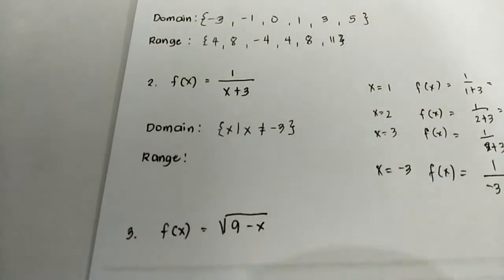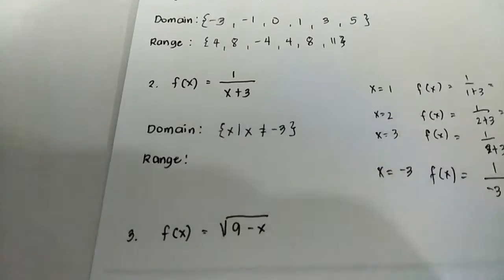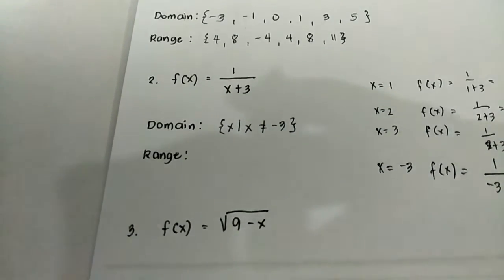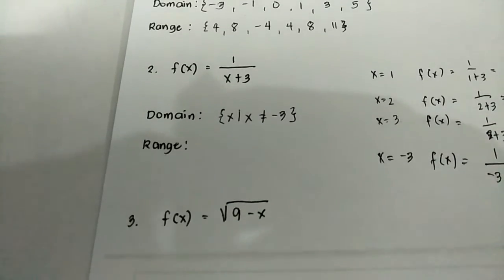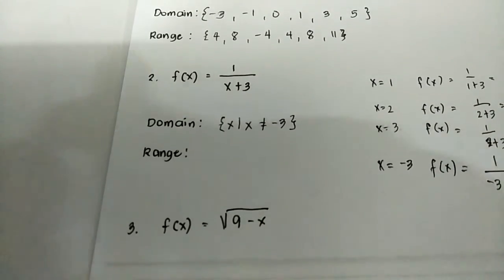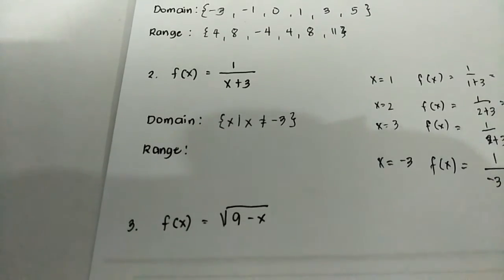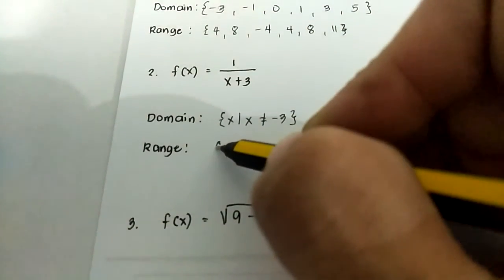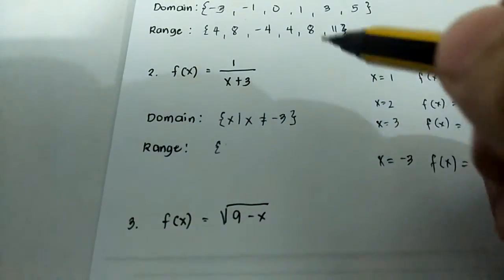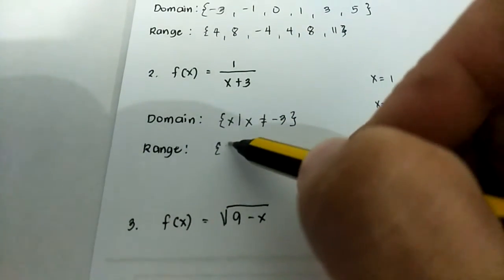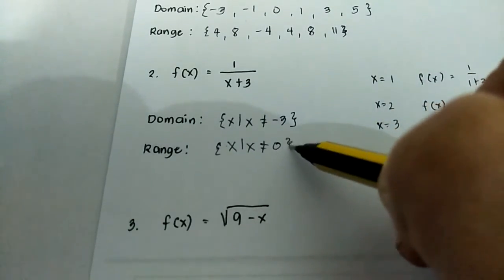When we get the range — after substituting all possible values of x — the function cannot output zero. So the range is: y such that y is not equal to zero.